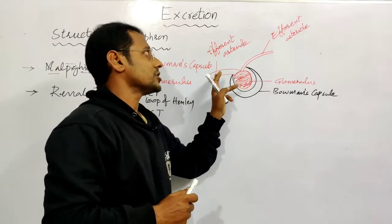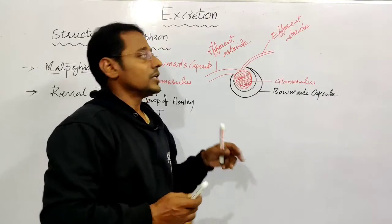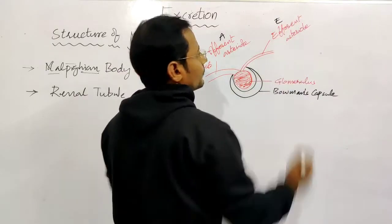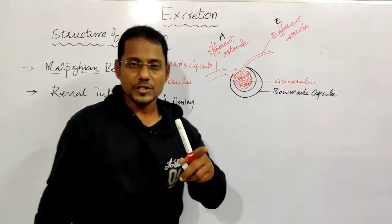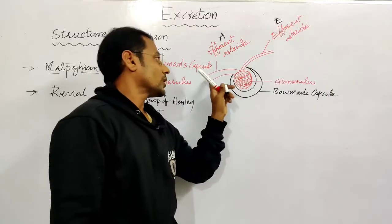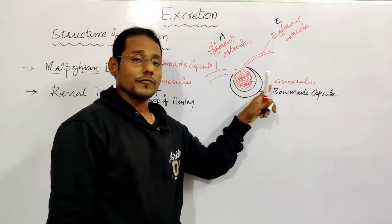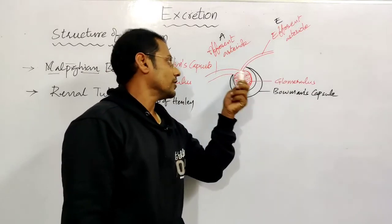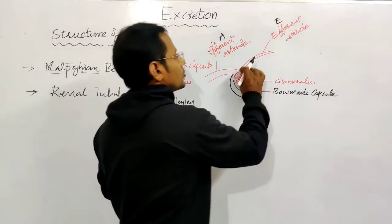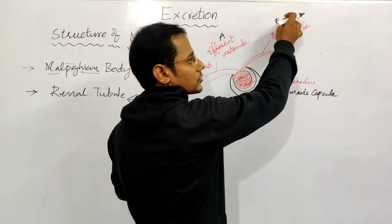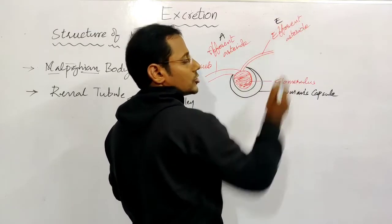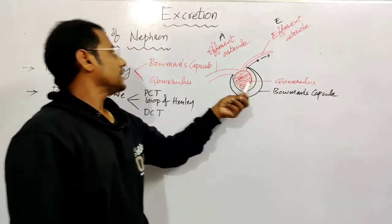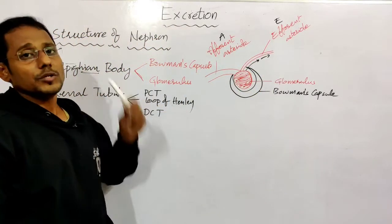So this is the afferent arteriole and this is the efferent arteriole. A is the first letter - afferent enters first and forms the glomerulus. After the glomerulus, the efferent arteriole exits. So 'A' comes before 'E': afferent comes in, efferent goes out. This is the complete structure of the Malphigian body.